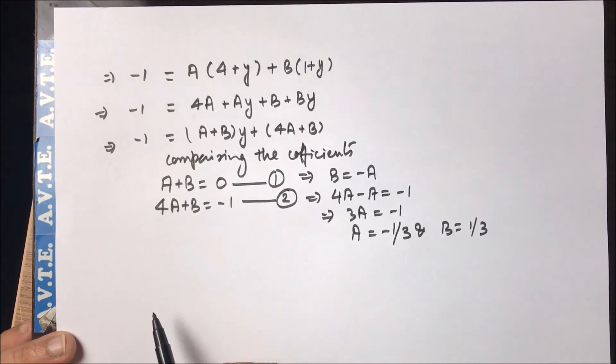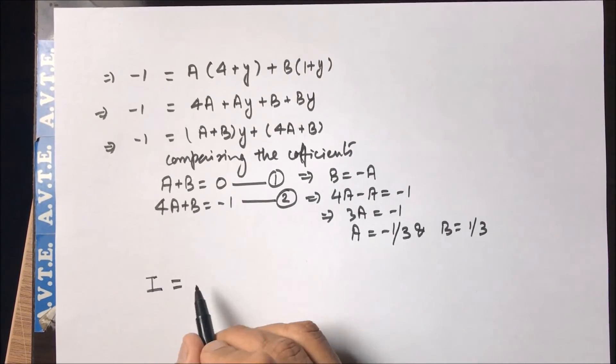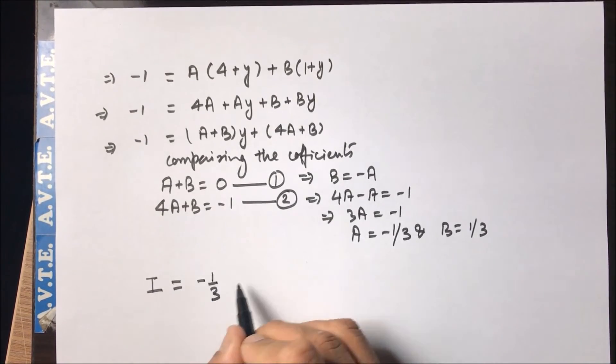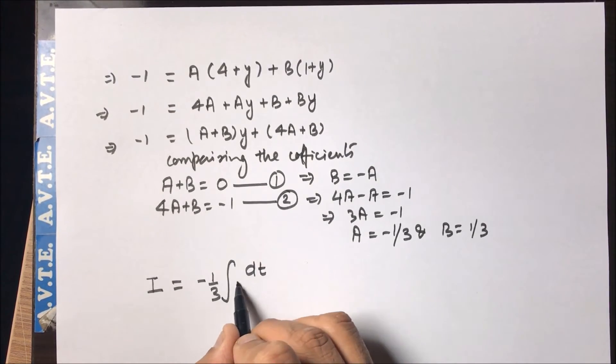Now as we'll come to integrate, we cannot integrate in y because the respect is still in dt. So as we write I equals, we put the value of A minus one by three. We put the sign of integration. We have to come back to t.